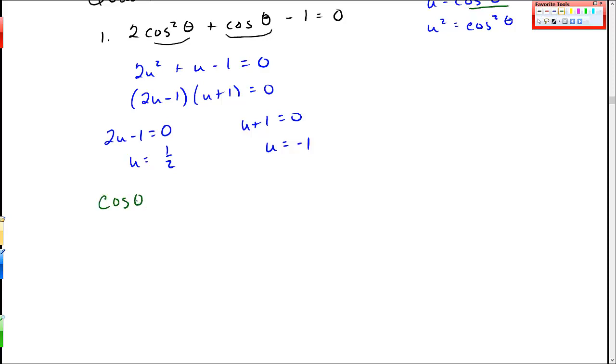So cosine theta equals 1 half, and then here cosine theta equals negative 1. So again thinking about the unit circle and where cosine theta is 1 half.